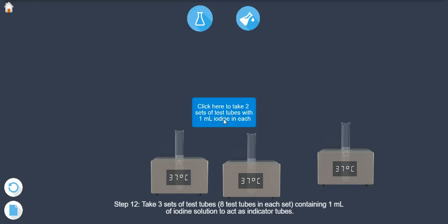Step 12: Take 3 sets of test tubes, that is, 8 test tubes in each set, containing 1 ml of iodine solution to act as indicator tubes.